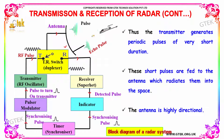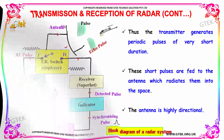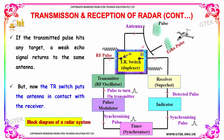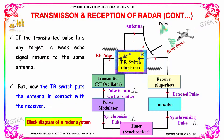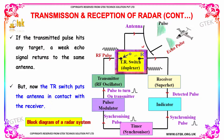The antenna is highly directional. If the transmitted pulses hit any target, a weak echo signal returns to the same antenna. The TR switch then puts the antenna in contact with the receiver.